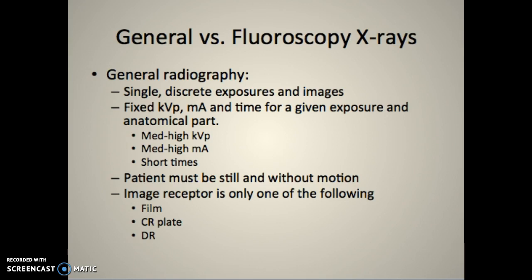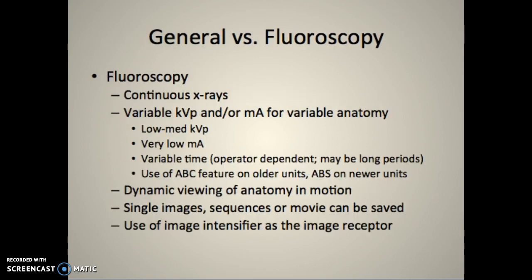Image receptors in general radiography include film, CR, and DR plates. In fluoroscopy it's a continuous x-ray, with variable kVp and mA for the anatomy. We use low to medium kVp and as low an mA as possible - very low compared to general diagnostic x-ray.